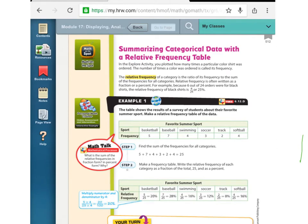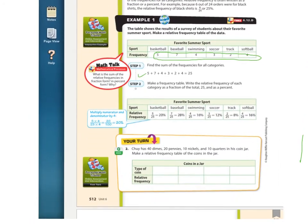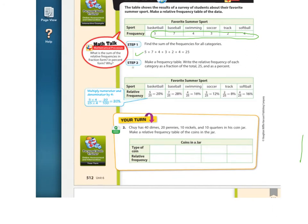Summarizing categorical data with a relative frequency table. The relative frequency of a category is the ratio of its frequency to the sum of the frequencies for all categories. So what you do is you add them all up, and then you're going to find the percent for each one. Step one says first you find the sum. Sometimes it'll tell you how many there are total, but in this case it doesn't. They added them up for us and got 25, which is a nice friendly number for finding percent. Now they're changing each fraction into a percent.